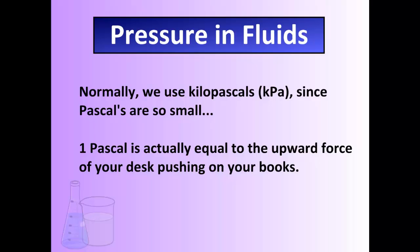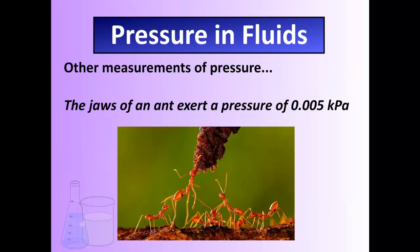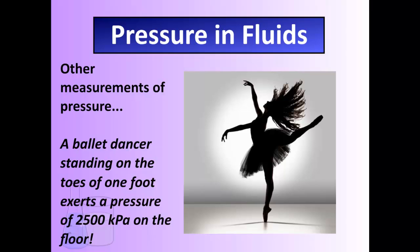Here are some other examples of pressure you might have heard of. Air pressure at sea level — the pressure of air as it pushes down on you — is 101.3 kilopascals. The amount of pressure within the jaws of an ant is 0.005 kilopascals, so about five pascals — very little force, but still quite a bit for a small creature. On the other end, a ballet dancer standing on the toes of one foot exerts a pressure of 2,500 kilopascals on the floor. That's a lot of pressure.